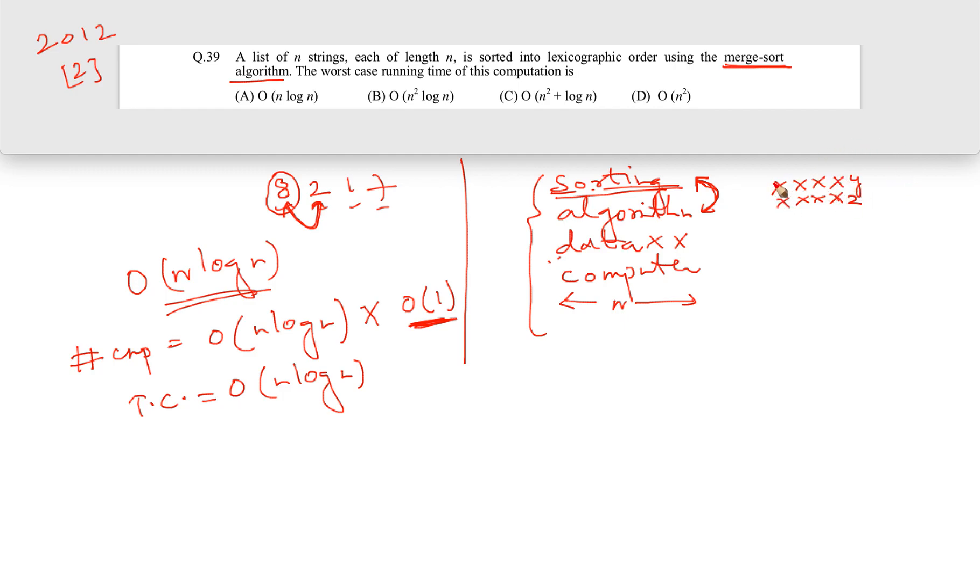Actually, to determine lexicographically which one is bigger and which one is smaller, you have to compare the first characters, then the second characters. If there is a mismatch, then you can conclude at that point only. If they are the same, then we have to move forward. In worst case, you can go all the way till n minus 1 positions, and at the final position you will come to know what is bigger and what is smaller.